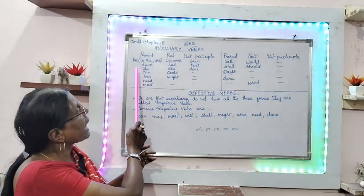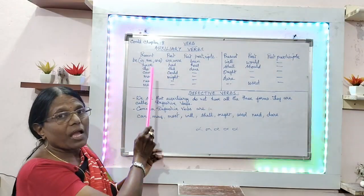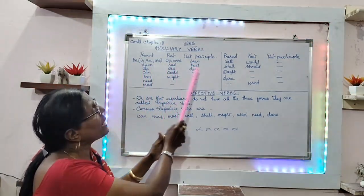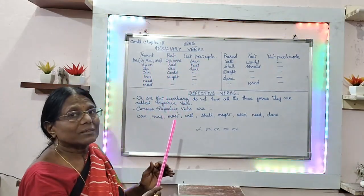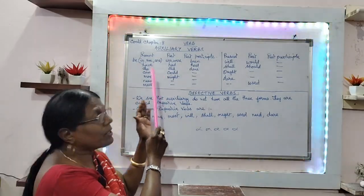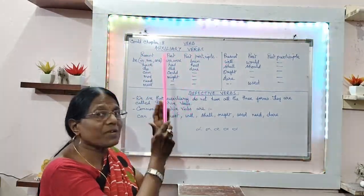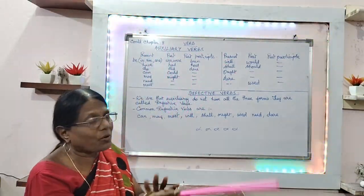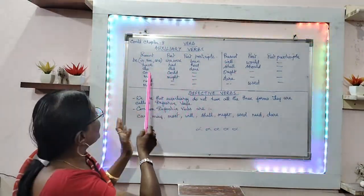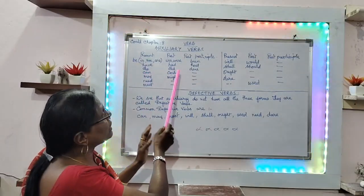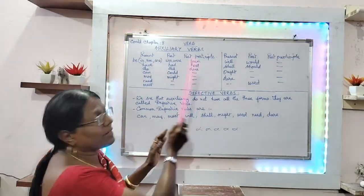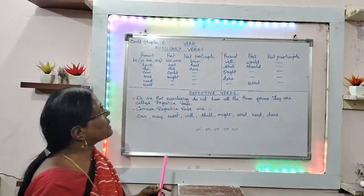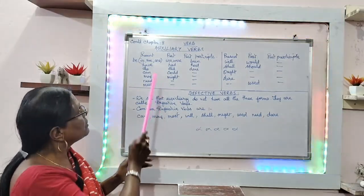Next is 'have': have, had, had. Which tense we are using, you will learn later on. Now 'do': do, did, done. 'Did' is the past tense and 'done' is the past participle.